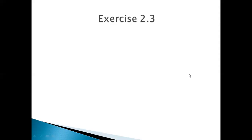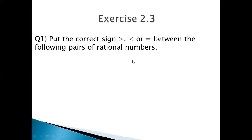In Exercise 2.3, the first question is related to rational numbers. You are given a pair of rational numbers and you have to identify which one is greater, which one is less, or which ones are equal. To find this, you make the denominator the same, and after that you can easily identify which rational number is greater, less, or equal. In question number 1 there are 12 parts — some I will discuss in this video and some you will do as homework.